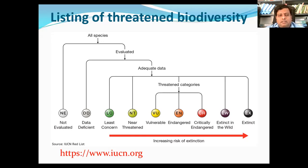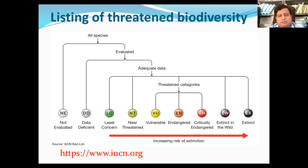The IUCN Red List of Threatened Species recognizes several categories. The status Extinct, designated by EX, is applied to species in which the last individual has died, or where a systematic and time-appropriate survey has been unable to record even a single individual. That is considered the extinct category.